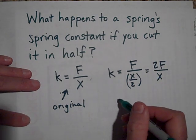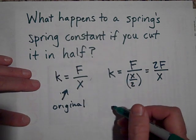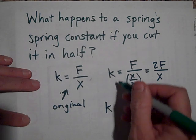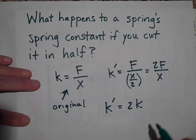And so that two can come up top. So the K goes up. This is the new K. So the new K, we'll call that K prime. K prime is going to be twice the old, the old one.